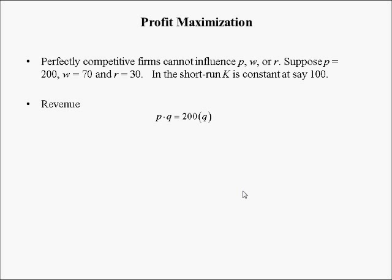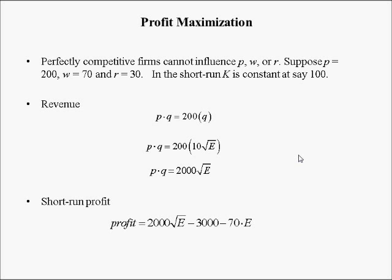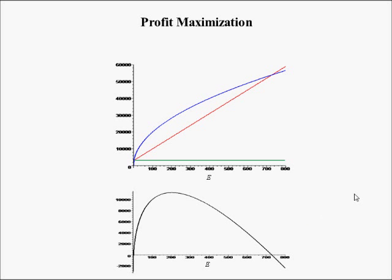Revenue equals price times quantity: P × Q = 200 × 10√E = 2,000√E. The short-run profit function is revenue minus total expenses: profit = 2,000√E − 3,000 − 70E. The curve graphed is the profit function. The fixed expense line is flat, the blue curve is revenue, and the red line is total expenses including the 70E variable component.